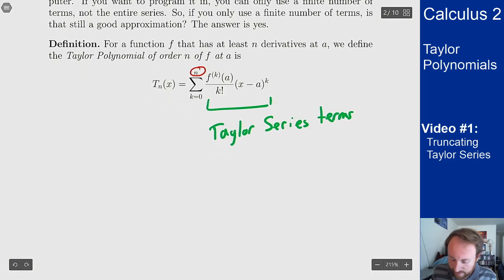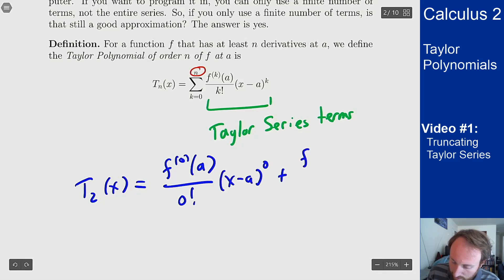For example, T₂(x) would look like f⁽⁰⁾(a)/0! times (x-a)⁰ plus f⁽¹⁾(a)/1! times (x-a) plus f⁽²⁾(a)/2! times (x-a)².